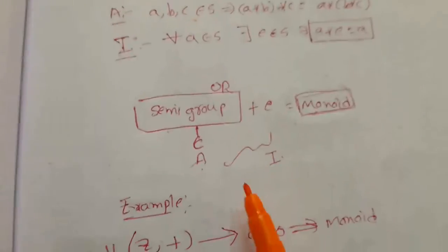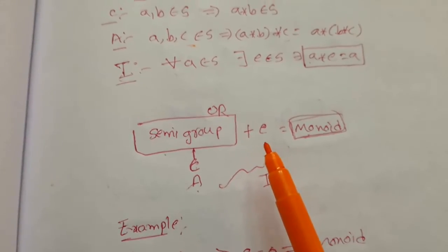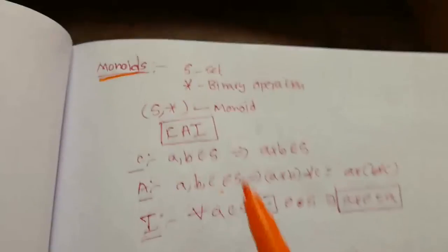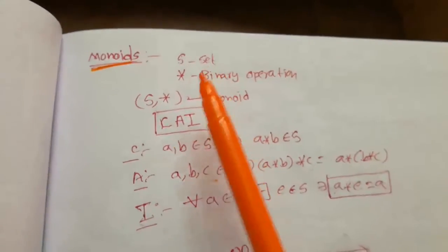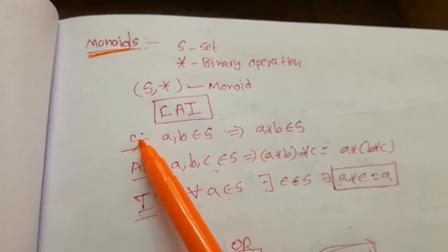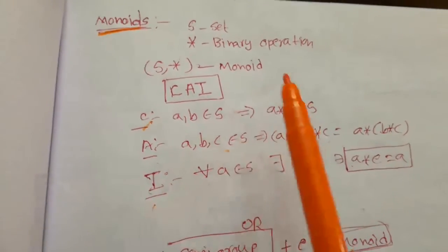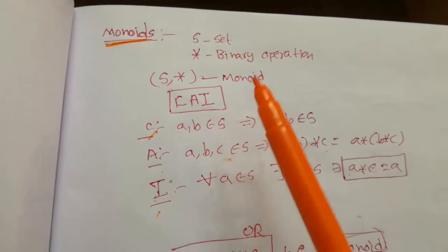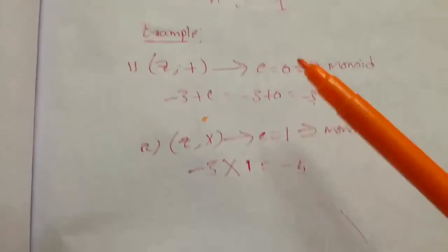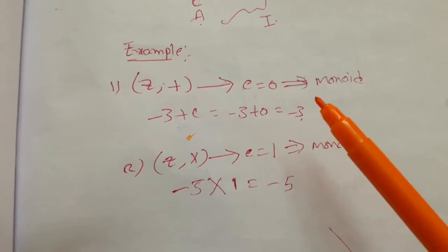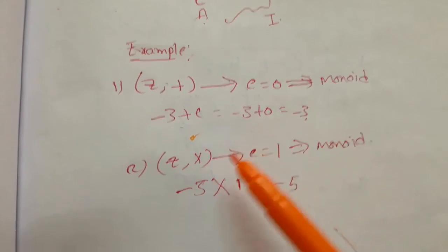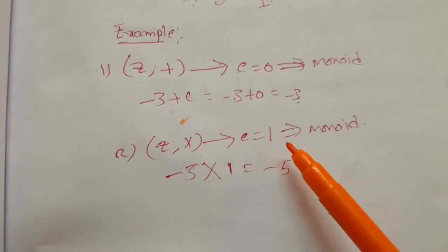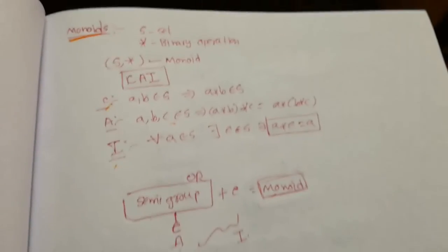So a semi-group which has identity element E is called Monoid. Or if S satisfies closer, associative, and identity under a binary operation, then S star is called Monoid. Z plus has identity element 0, and Z cross has identity element 1. Thank you.